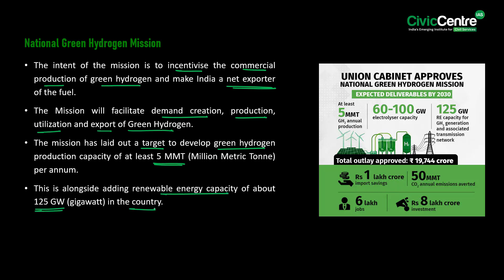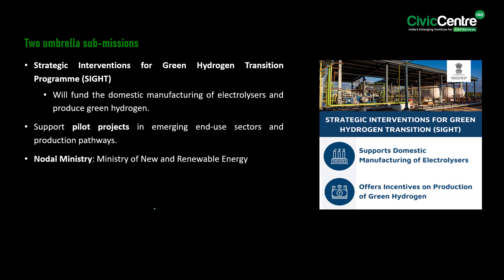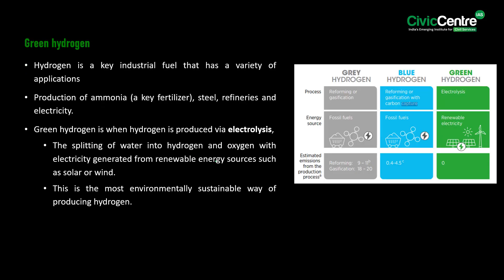There are two umbrella sub-missions under the program. The first is the Strategic Interventions for Green Hydrogen Transition Program, called SIGHT, which will fund the domestic manufacturing of electrolyzers and produce green hydrogen. The second is to support pilot projects in emerging end-use sectors and production pathways. The nodal ministry is the Ministry of New and Renewable Energy.